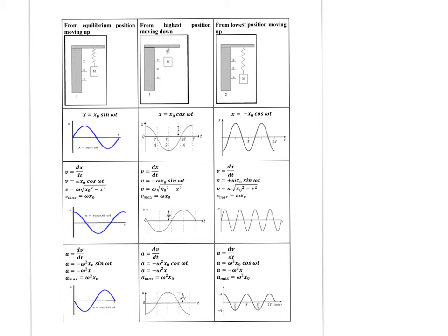If you can't remember the formula, use the graphical shortcut: just think about how you'd plot x versus t. Starting from the middle going up gives a sine graph; starting from the highest point going down gives a cosine graph; starting from the lowest point going up gives a negative cosine graph. This avoids having to re-derive from circular motion every time.